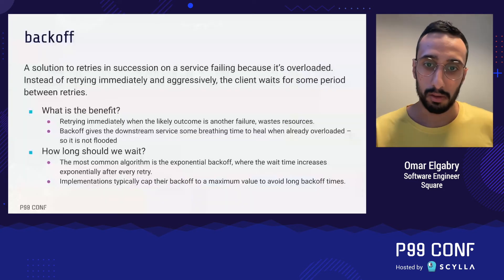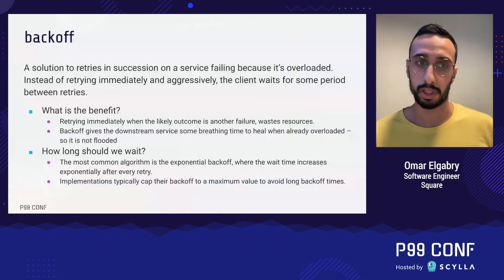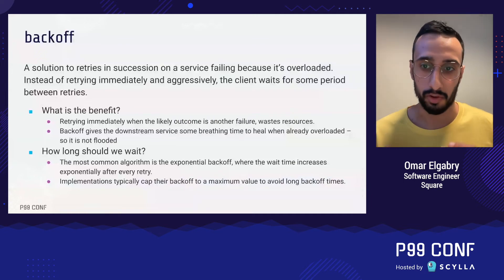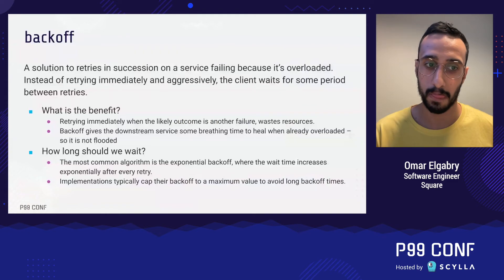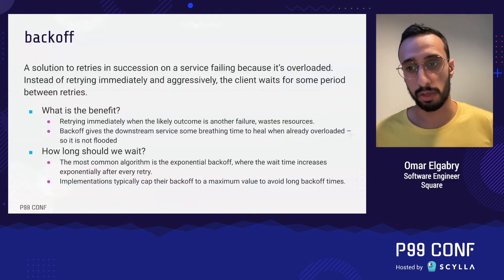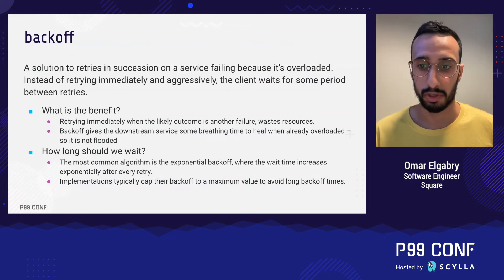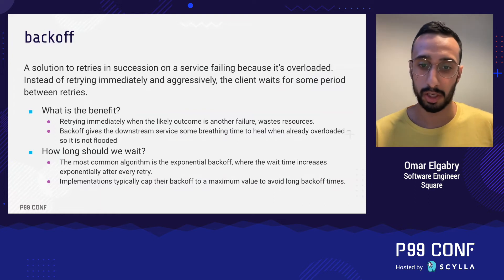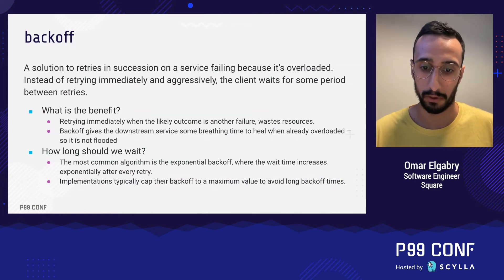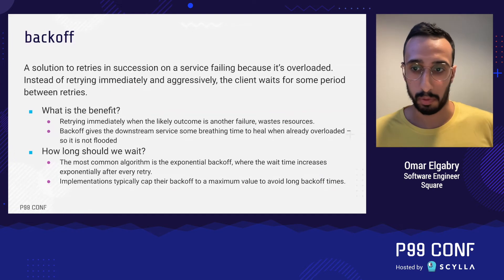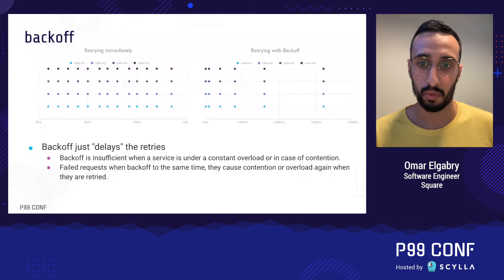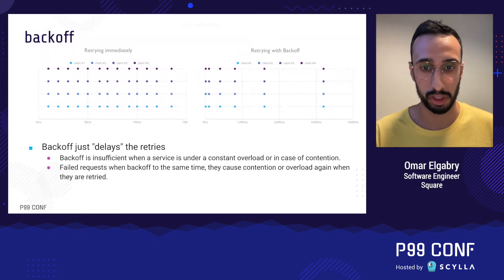Backoff is a solution to retrying in succession when a service is failing because it's overloaded. Instead of retrying immediately and aggressively, the client waits for some period between retries. Retrying immediately when the downstream service is overloaded will likely result in another failure, while backoff gives the downstream service breathing time to heal. The most common algorithm is exponential backoff, where the wait time increases exponentially after every retry. This diagram shows the difference: without backoff there are no gaps between retries, but with backoff the gaps grow exponentially.